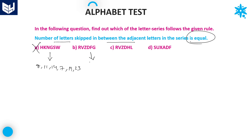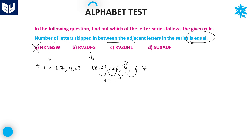Let's check the next option. R is equal to 18, V is equal to 22, Z is equal to 26. Again, it is 4, after that 6, after that 7. D is equal to 4, F is equal to 6, G is equal to 7. Here it is plus 4, plus 4, and you can write this one as 30, so this is also plus 4. But from Z to D, it is not plus 4 — these first three are plus 4, but the last gap is not.